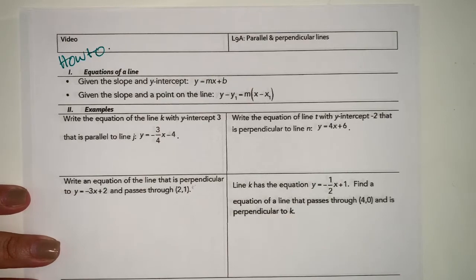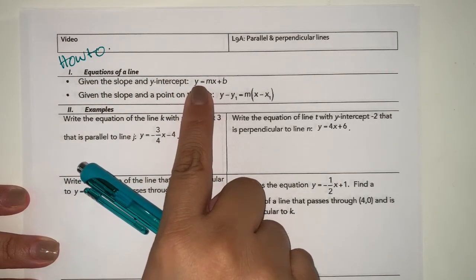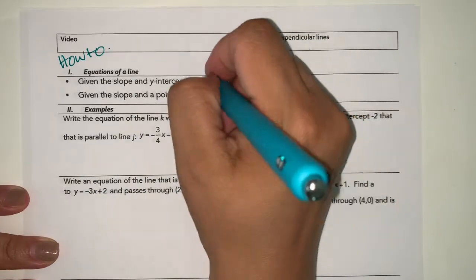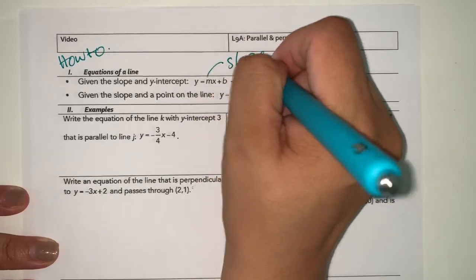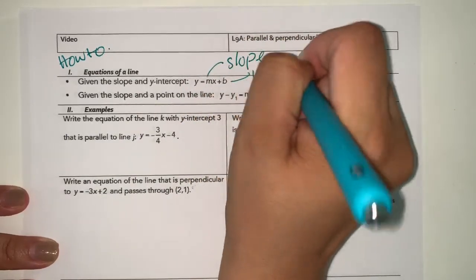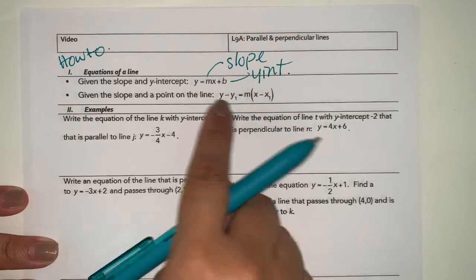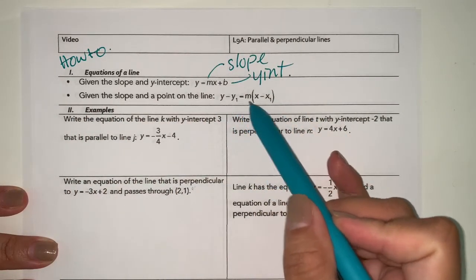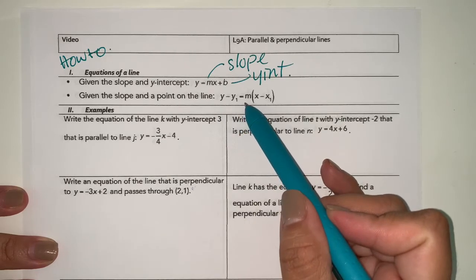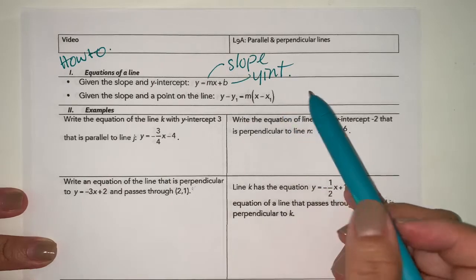Given the slope and y-intercept, you're going to use y equals mx plus b, where m is slope and b is the y-intercept. And given the slope and a point on a line, you're going to use the point-slope formula: y minus y1 equals m times x minus x1.